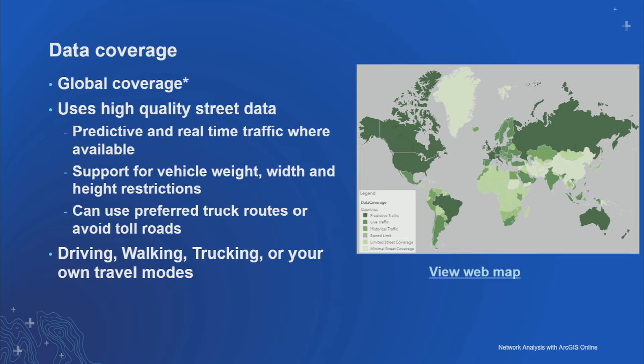You can also say you want to find routes for routing hazardous goods, or only use streets designated as preferred truck routes. All of this is modeled using travel modes, of which we provide driving, walking, and trucking. We also have the ability to create your own travel modes, and Max is going to show this in a demonstration in a few minutes.